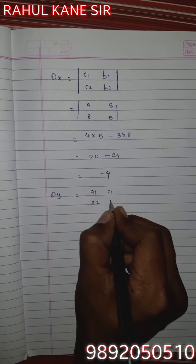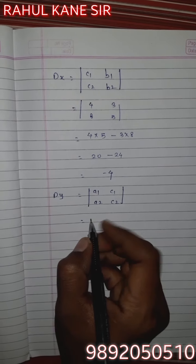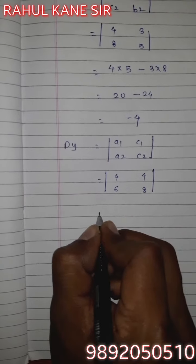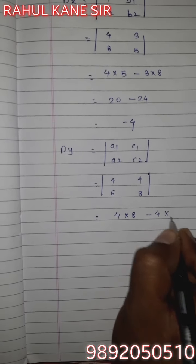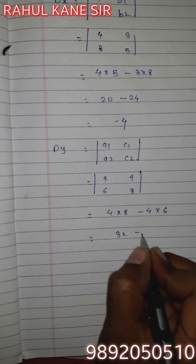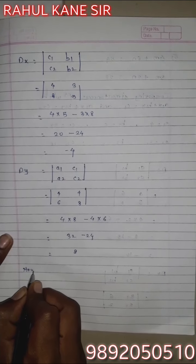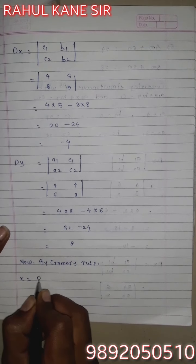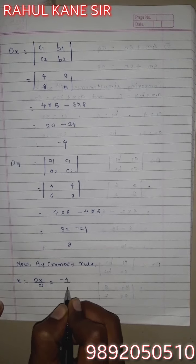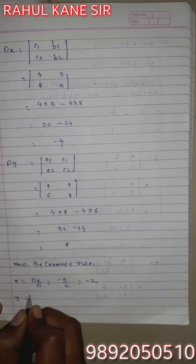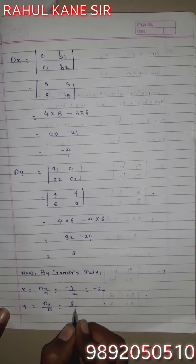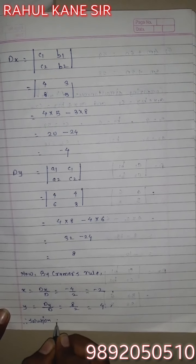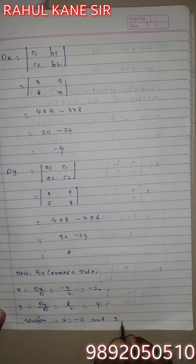Next, Dy equals |a1, a2, c1, c2| equals |4, 6, 4, 8|. By cross multiplication: 4×8 minus 4×6. Fours eights are 32, minus fours sixes are 24. 32 minus 24 equals 8. By Cramer's rule: x = Dx/D = -4/2 = -2; y = Dy/D = 8/2 = 4. Therefore solution: x = -2 and y = 4.